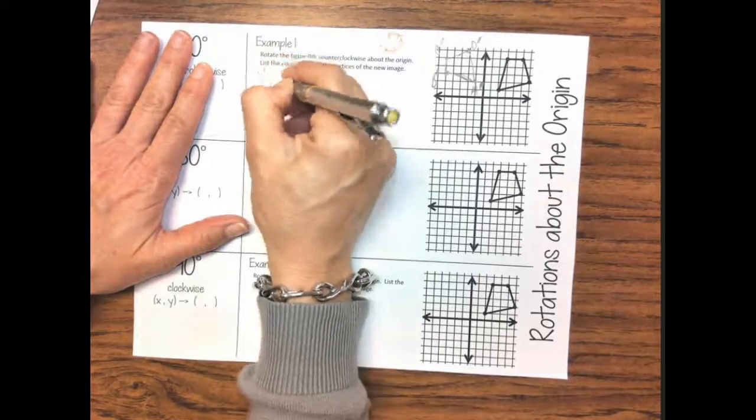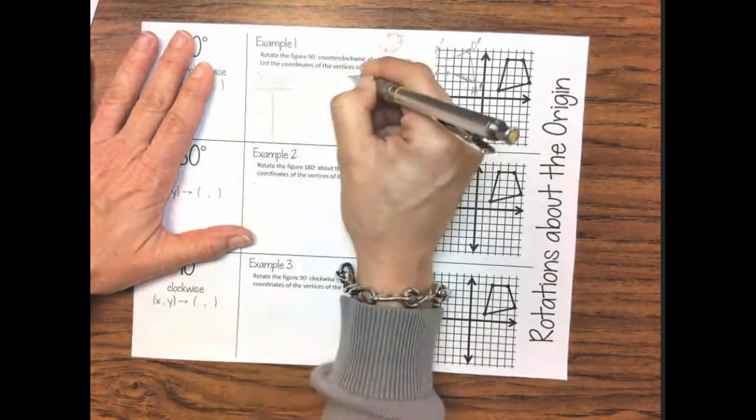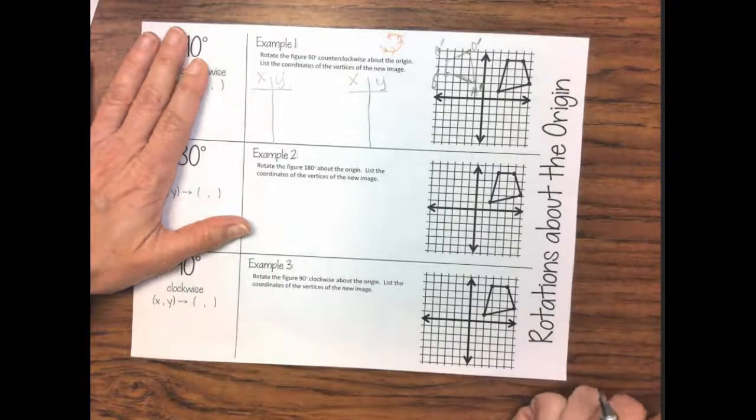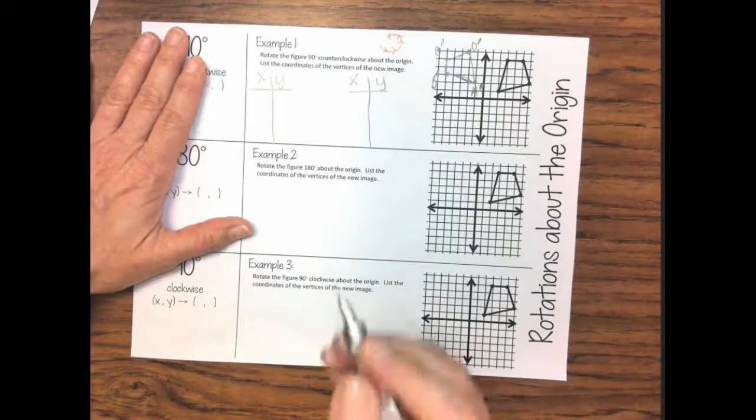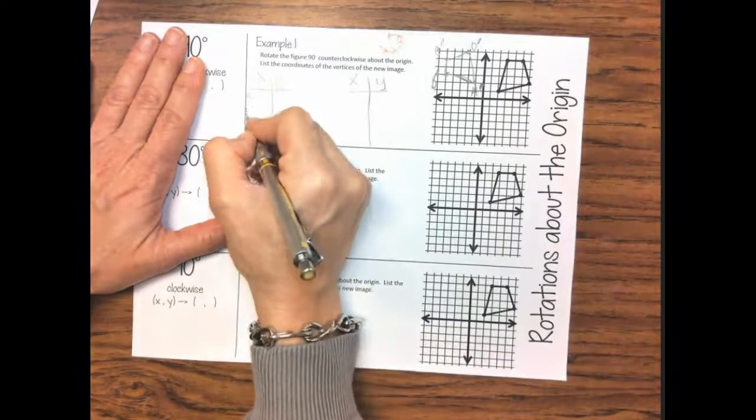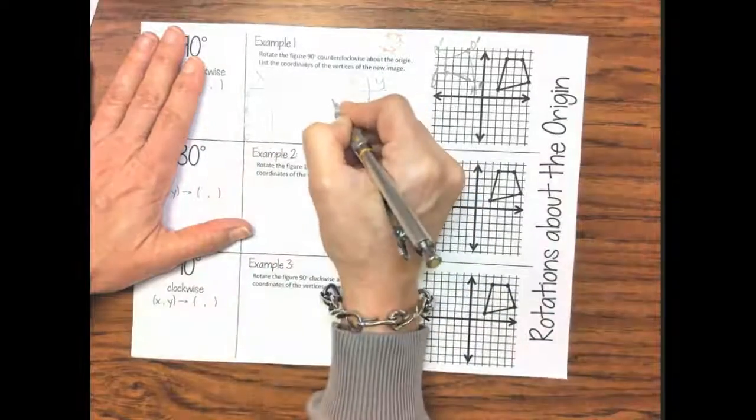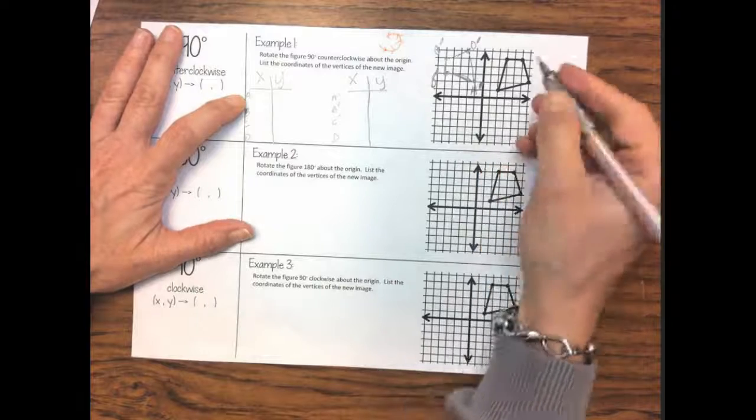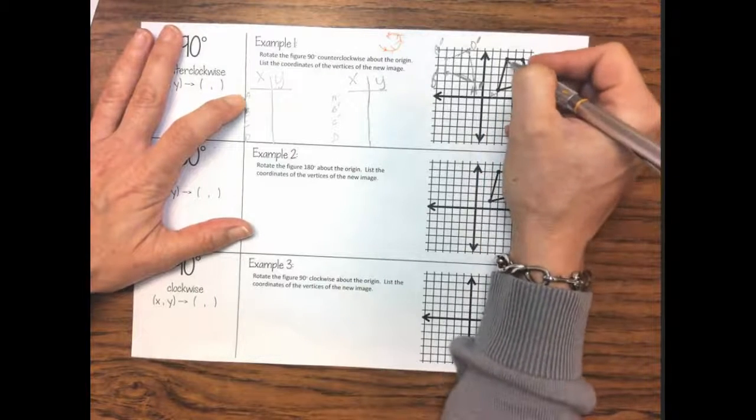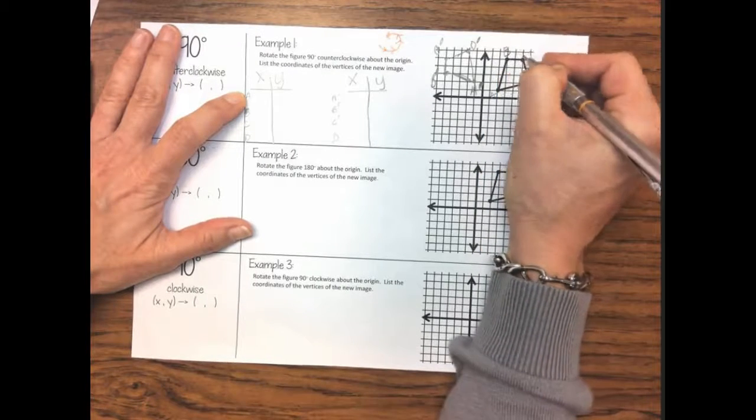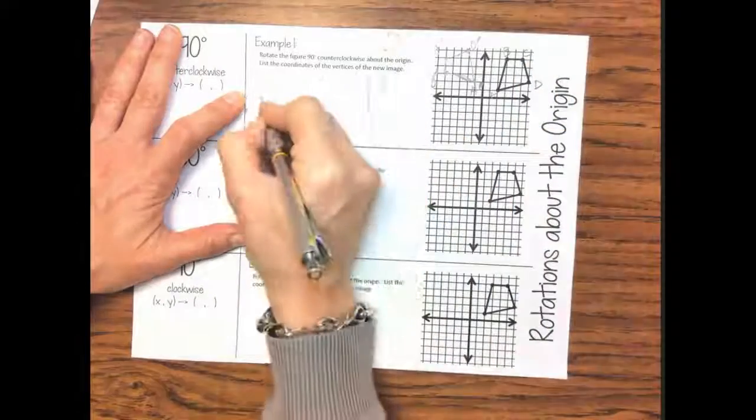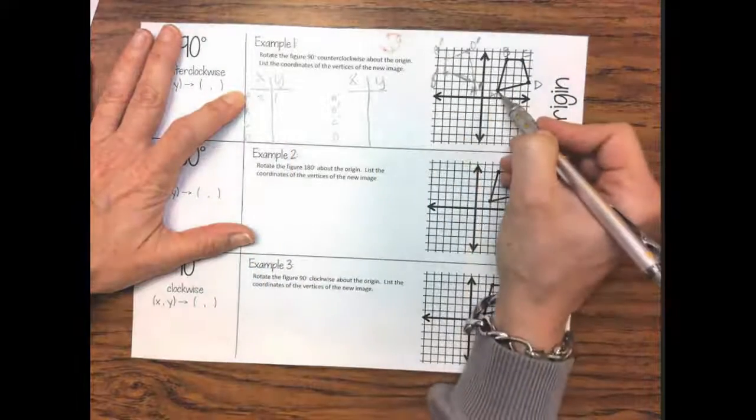So let's go ahead and draw an xy chart and let's list the original and then let's list the image ordered pairs and see if we can figure out a pattern. So we're going to put a b c d on this one and we'll put our prime marks on this second one. All right, original a is a positive 2, 1.